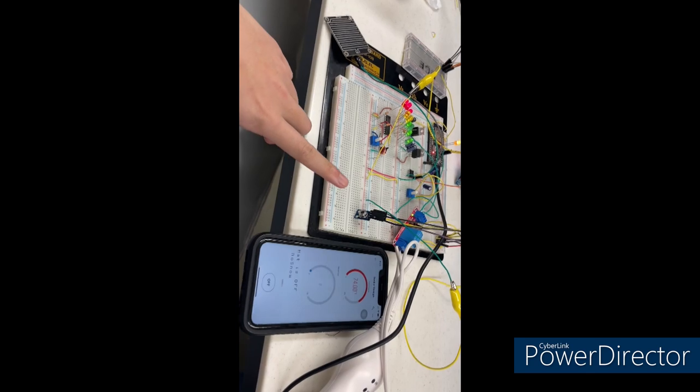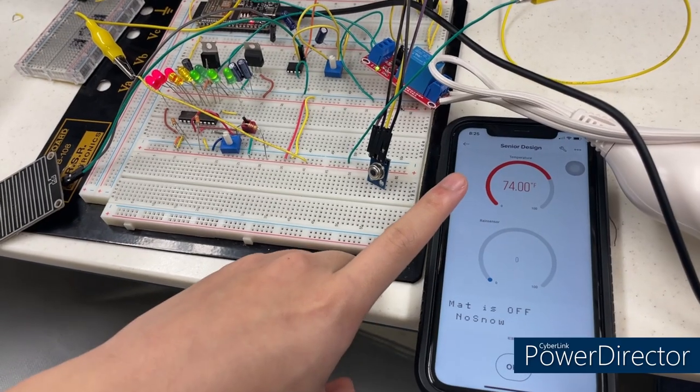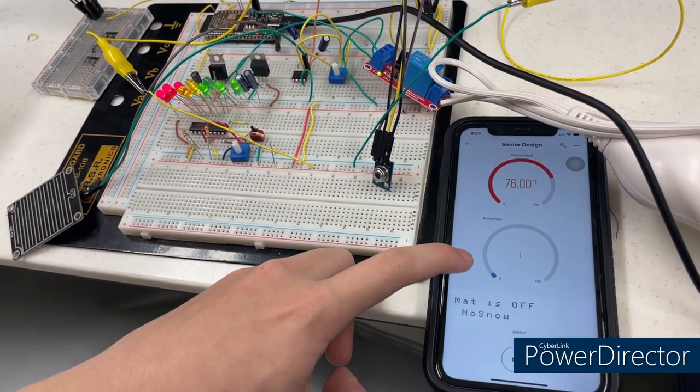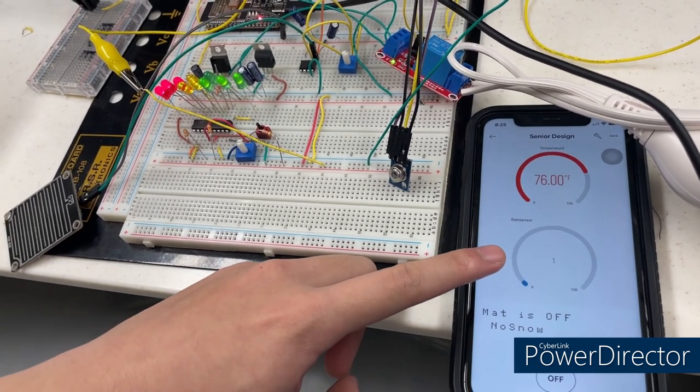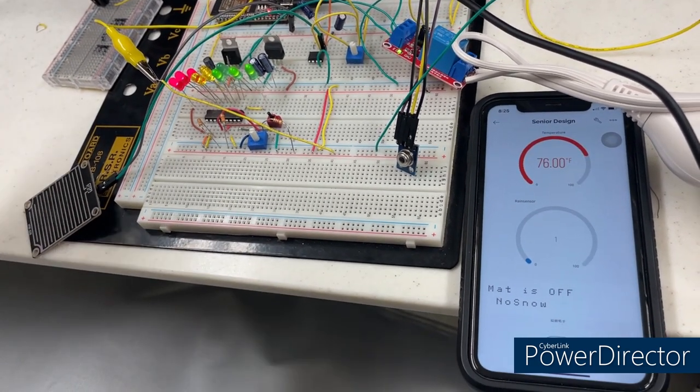Now we're going to demonstrate our integrated parts together: the temperature sensor, rain sensor, and relay module. First, I'll demonstrate the temperature sensor. As you can see, here is the user interface. This is the temperature, and this is the rain sensor percentage. For demonstration, I use a cup of ice to show it can tell the temperature of the atmosphere.